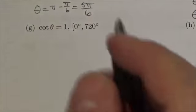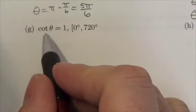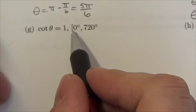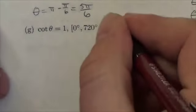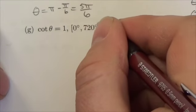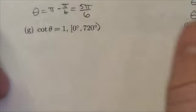Hi everyone. In this case, we're being asked to solve cotangent of theta equals 1 between 0 degrees and 720 degrees. Now it's kind of weird - there's no end to this, so it's an open interval there.